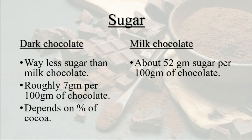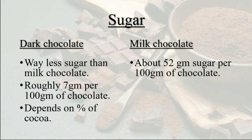The next parameter is sugar content. Milk chocolate is very sweet and contains about 52 grams of sugar per 100 grams — that's quite high. Dark chocolate has a typical bitter taste due to the presence of cocoa and less sugar, with roughly 7 grams of sugar per 100 grams. The sugar amount also depends on the percentage of cocoa: the more cocoa, the more bitter it is, and the sugar is balanced accordingly.